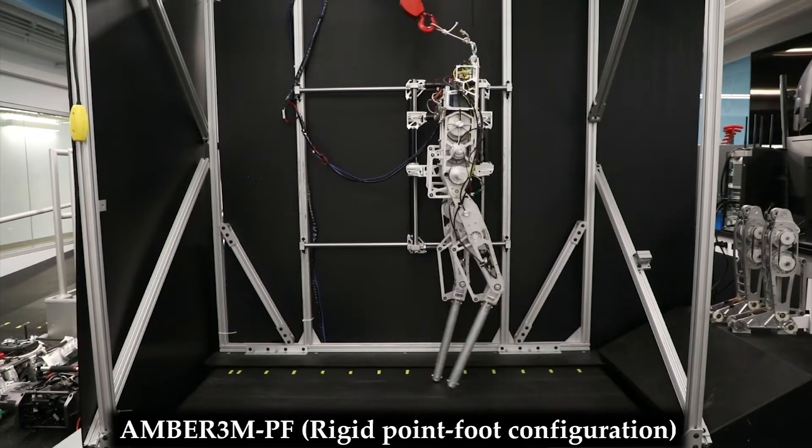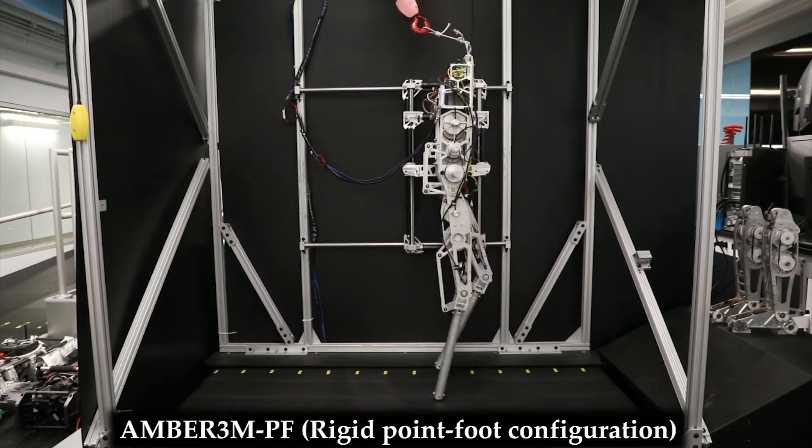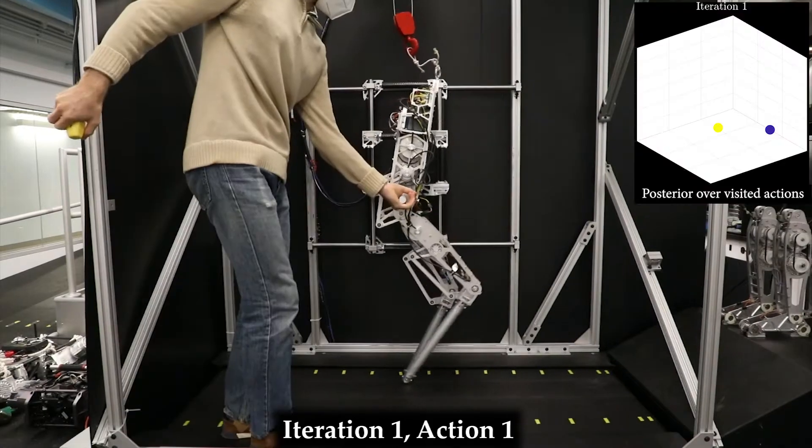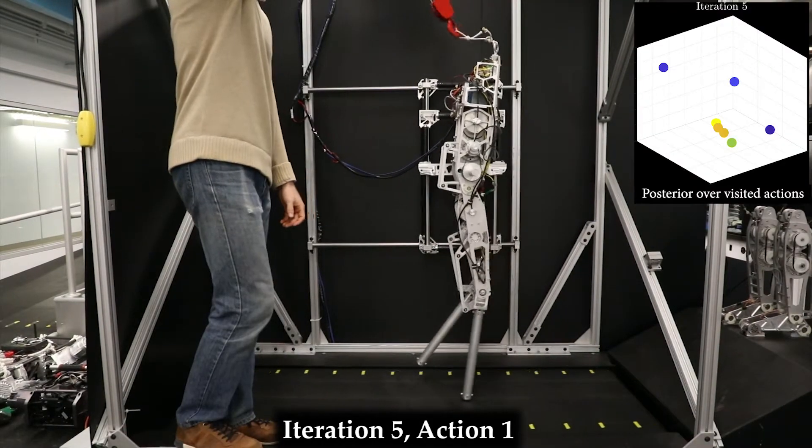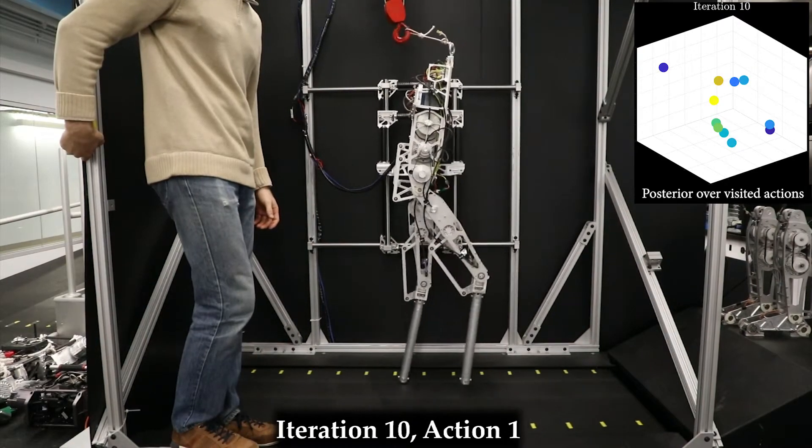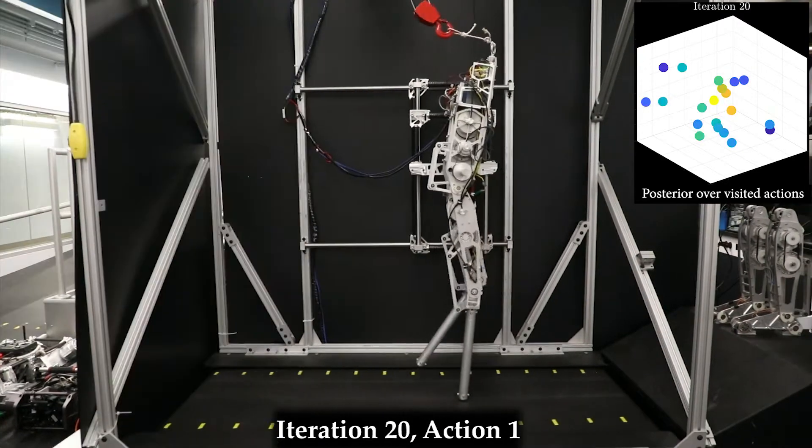The combined framework was first demonstrated on AMBER 3M with rigid point feet. In each experimental iteration, the algorithm updated its belief of the utilities associated with each set of constraint values, and the experimental behavior of the robot gradually improved.